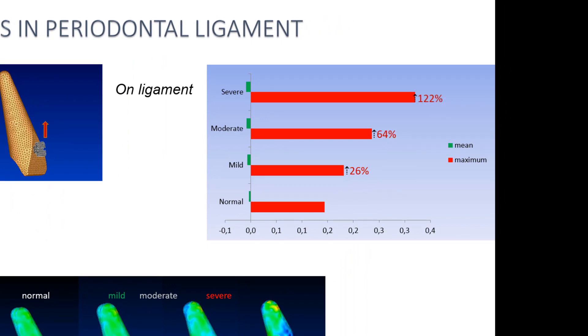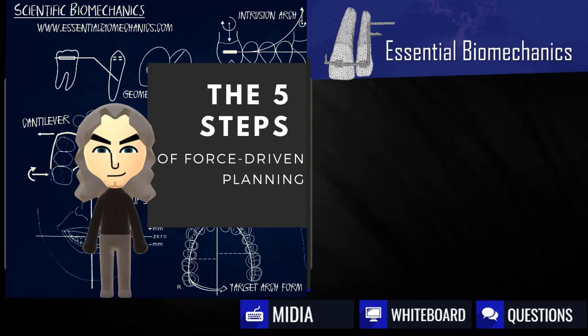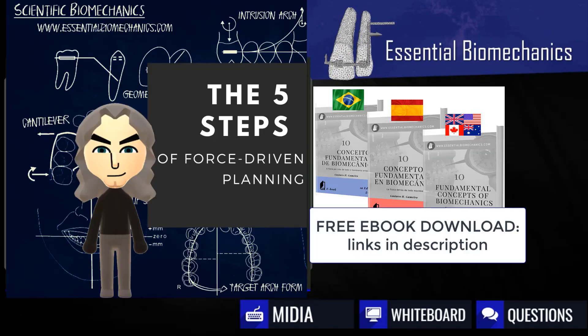These higher forces can be a problem for both the bone and root resorption processes. To sum up, our results have claimed our attention that we need very careful mechanics in order to work with compromised periodontal dentitions. So, let's follow our five steps of a force-driven planning to solve our problem.